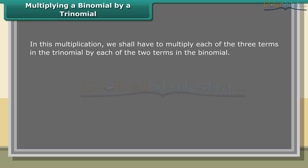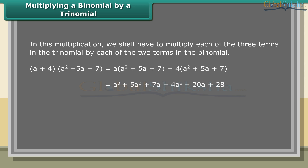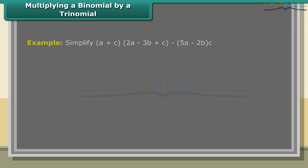When multiplying a binomial by a trinomial, each of the three terms in the trinomial is multiplied by each of the two terms in the binomial. For example: (a + 4)(a² + 5a + 7) = a(a² + 5a + 7) + 4(a² + 5a + 7) = a³ + 5a² + 7a + 4a² + 20a + 28 = a³ + 9a² + 27a + 28.